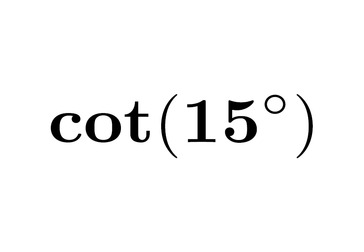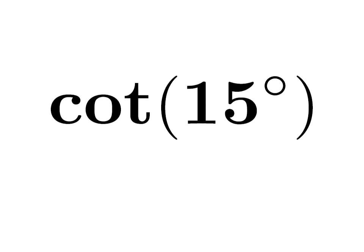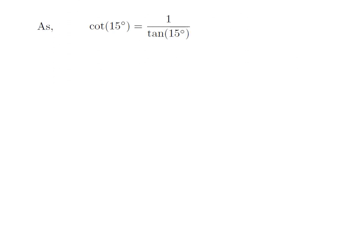In this video, we will learn to find the value of cotangent of 15 degrees. As we know, cotangent of theta is equal to 1 upon tangent of theta. So cotangent of 15 degrees is equal to 1 upon tangent of 15 degrees.